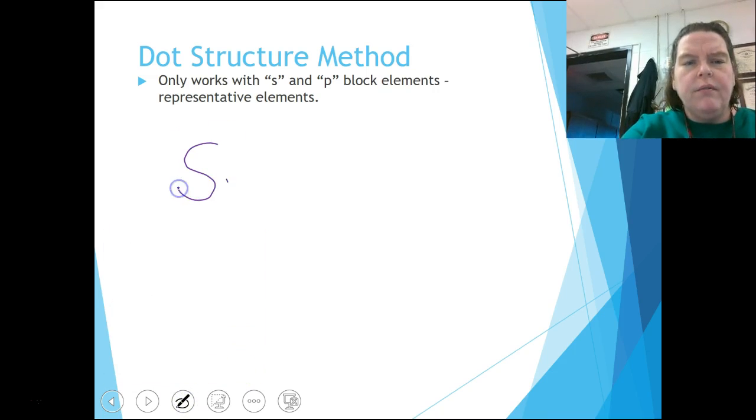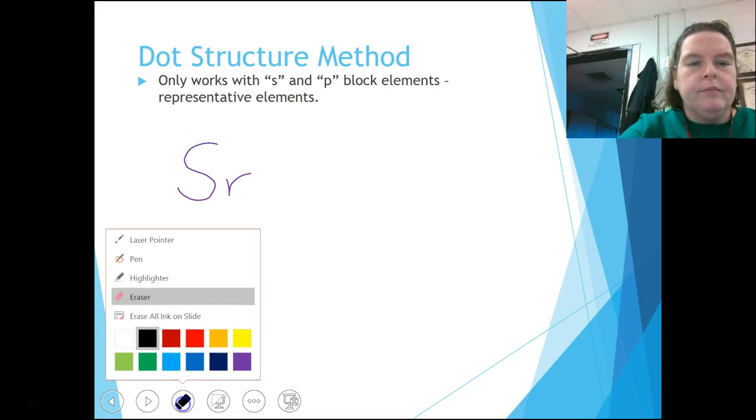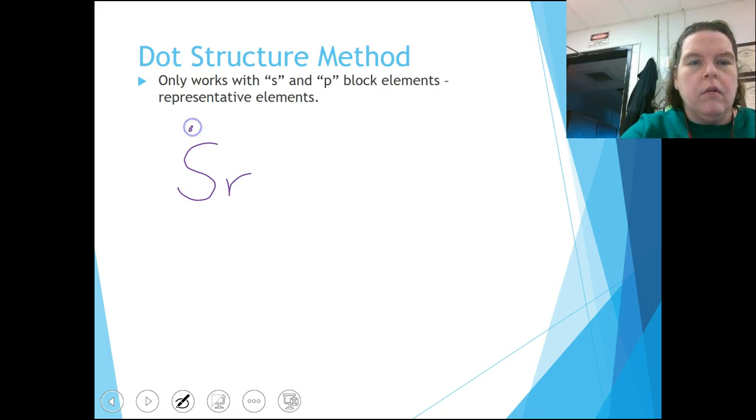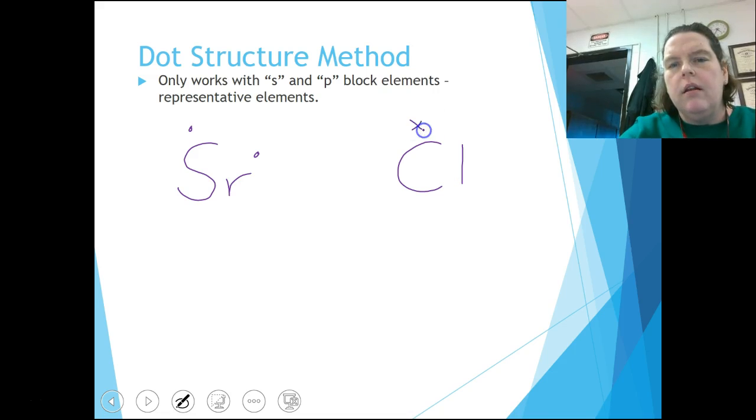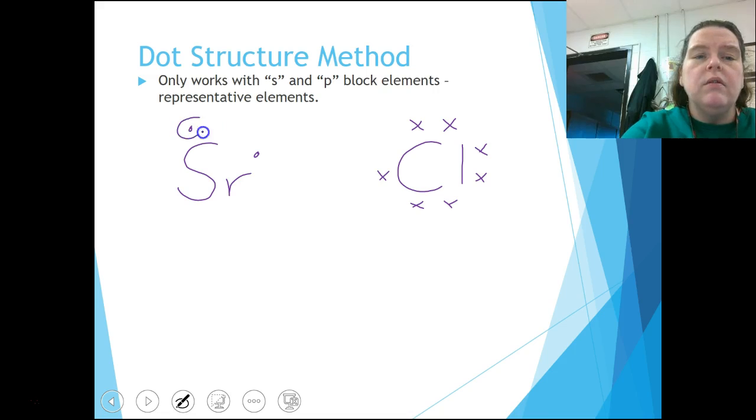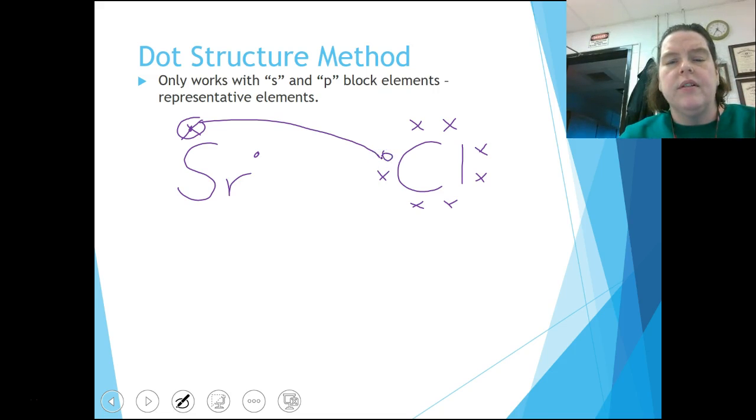So we have Sr. Sr has two valence electrons. And maybe we have, let's say, Cl. Cl has one, two, three, four, five, six, seven valence electrons. So what we see is we know that Sr wants to lose these valence electrons. So that valence electron is going to go here to Cl. And we have that valence electron from strontium right there for Cl. But notice strontium still needs to lose a valence electron. Cl is now happy. It's got a minus one charge. Everybody's octetted. Everybody's good.